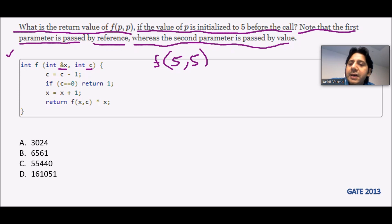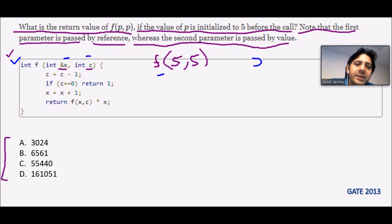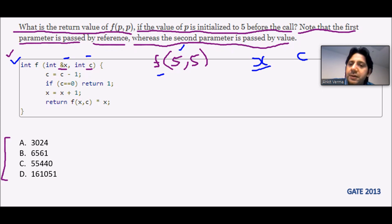We have some output options given and we have to solve this question. f(5,5) will call the function and pass the values 5 and 5. You can see there are two variables x and c. Please note that x is passed by reference method, so x will be passed by reference. The initial values are 5 and 5.